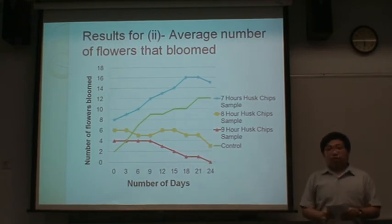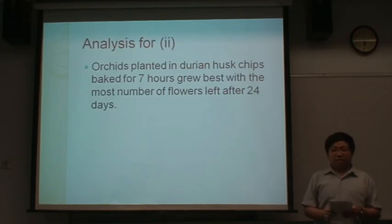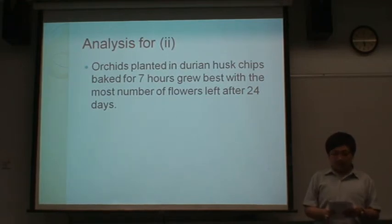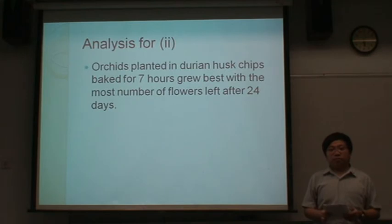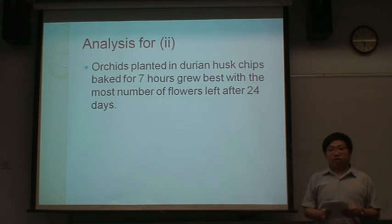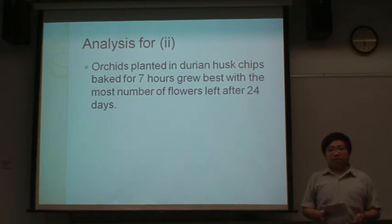As such, we conclude that the 7-hour dried Durian Husk chip samples bloom best. Our analysis is that orchids planted in Durian Husk chips dried for 7 hours bloom best, with the most number of flowers blooming. This is because the chips dried for a shorter period retain better water retention. In addition, since we changed our watering frequency from daily to once every 3 days, this may cause the plant to lack moisture, which hinders plant growth.